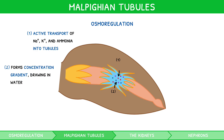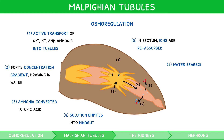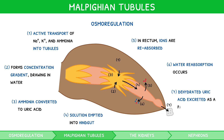Tubule cells then convert the absorbed ammonia into uric acid. The tubules empty the resulting uric acid solution into the hindgut, where it is mixed with semi-digested food. In the rectum, some ions are reabsorbed, causing water reabsorption by osmosis. This creates dehydrated uric acid paste, which is later excreted with undigested food as a paste.